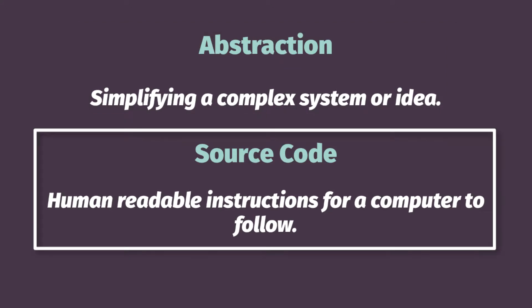Source code. If we're going to be giving instructions to a computer via a program, what we're going to be writing — what our programs are going to consist of — is called source code. Source code is human-readable instructions for a computer to follow. Some students will argue that source code doesn't look human-readable, and it's true we need to learn the computer language's rules, but in essence it's human-readable. We're not writing zeros and ones or flipping switches — we're actually writing something that looks a lot like spoken or written human language.